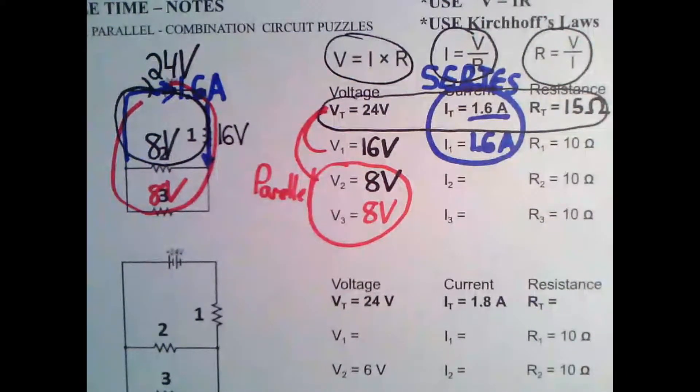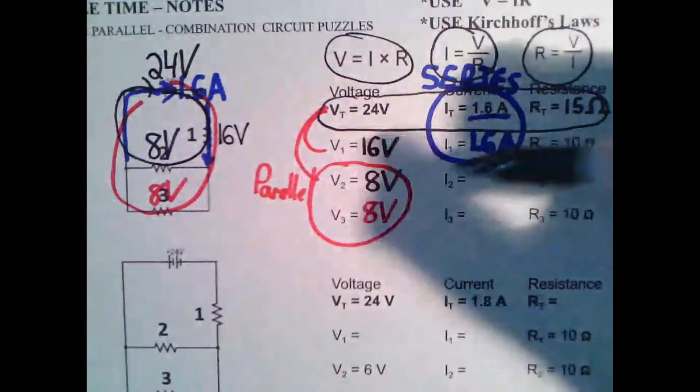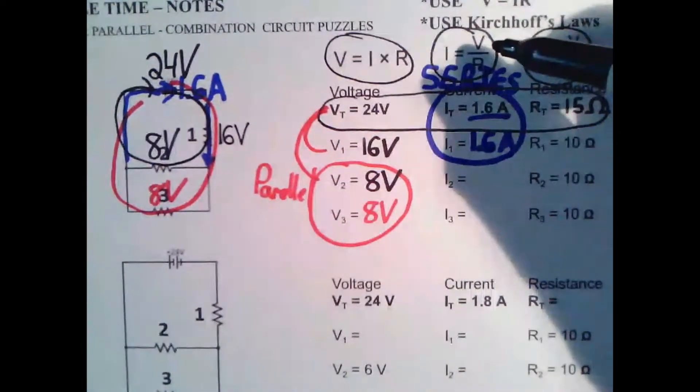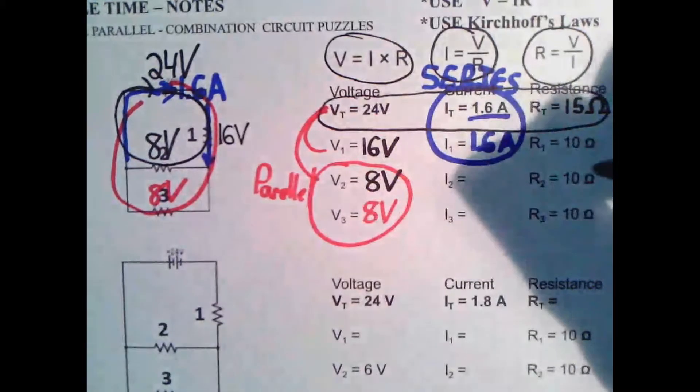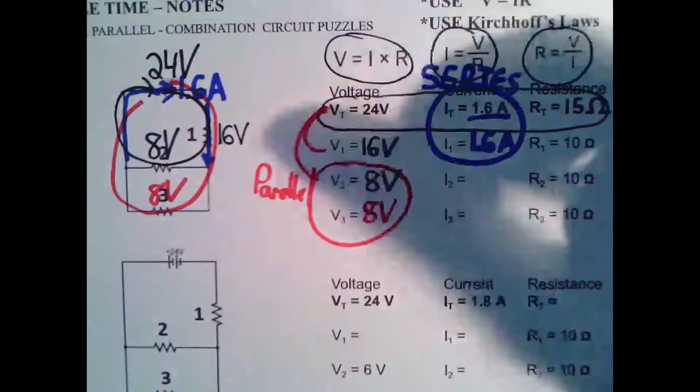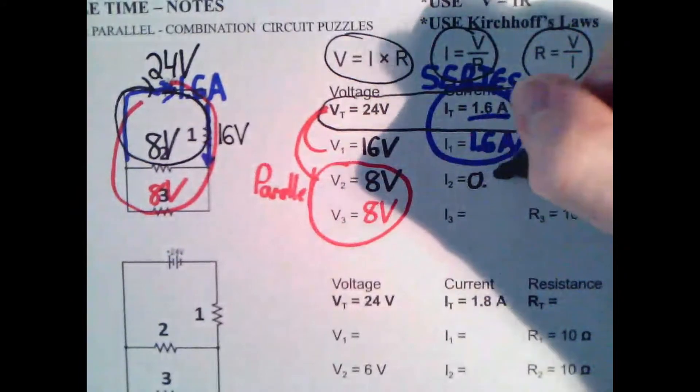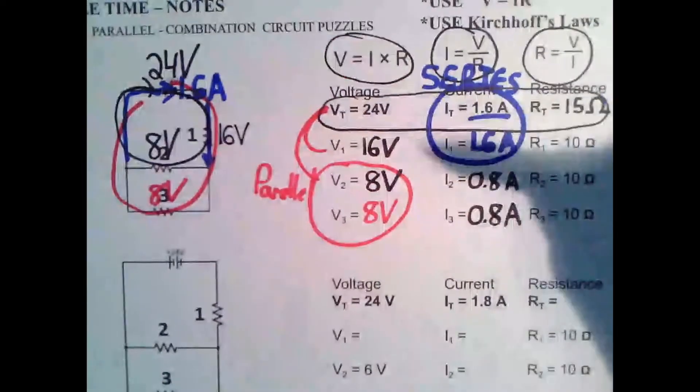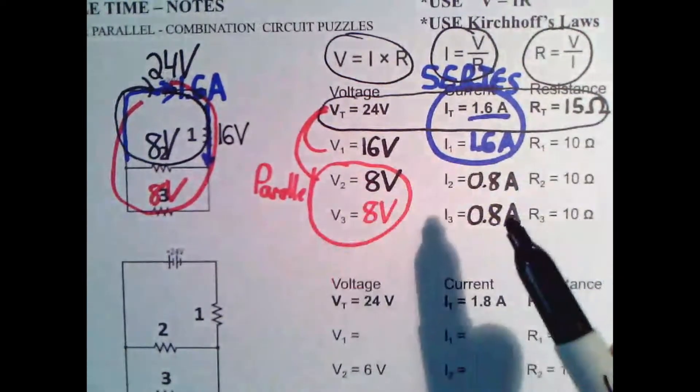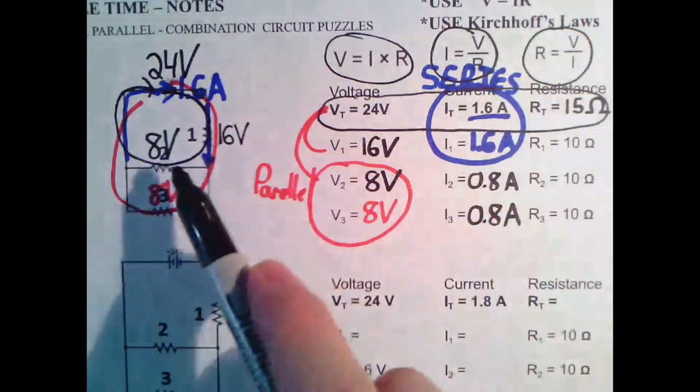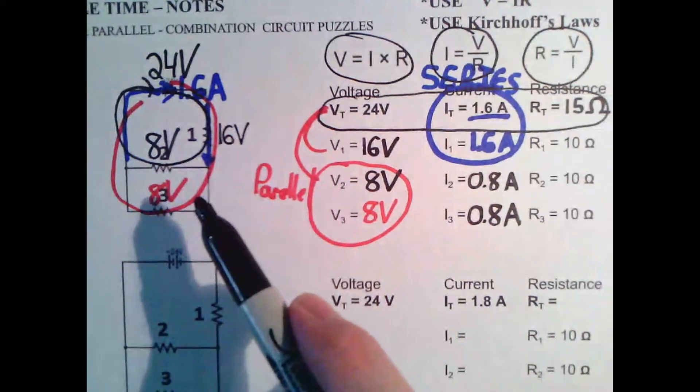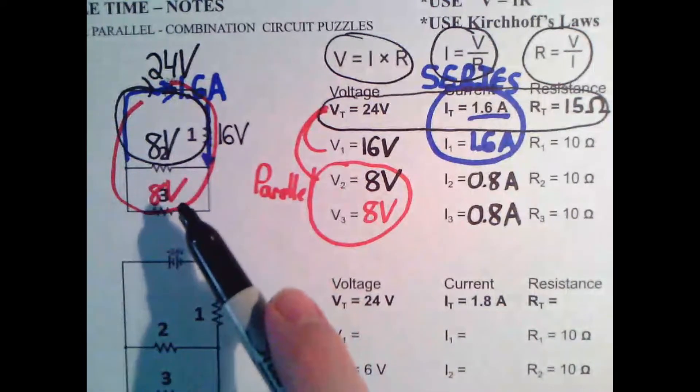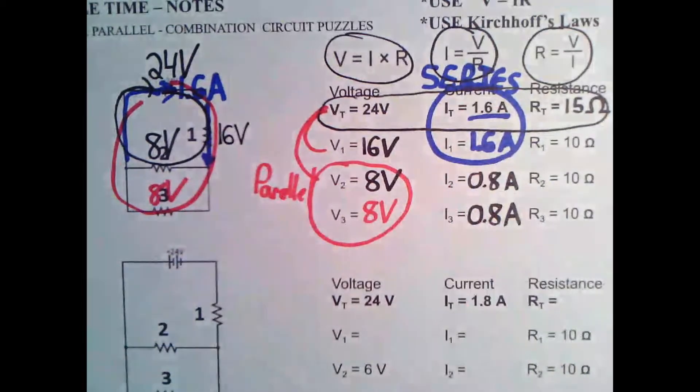And then we can figure out the other missing piece here. We can say anytime we have any two pieces, you can always find the last piece. So we can say that voltage divided by resistance, we can say 8 divided by 10. So we can get 0.8 amps, 0.8 amps, and we're good. So because these have the same resistance, it makes a lot of sense that the current would split perfectly in half between each path. So you have 1.6 amps coming out of the battery, and then it splits into path one and path two. And so each path is getting 0.8 amps.